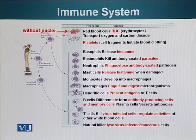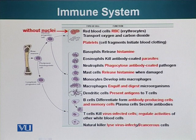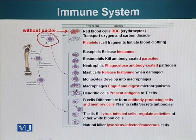These are pluripotent hematopoietic cells. These cells divide and they can form two types of progeny: myeloid progenitor cells and lymphoid progenitor cells.